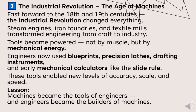Next is the industrial revolution — the age of machines. Fast forward to the 18th and 19th centuries: the industrial revolution changed everything. Steam engines, iron foundries, and textile mills transformed engineering from craft to industry. Tools became powered not by muscle but by mechanical energy. Engineers now used blueprints, precision instruments, drafting tools, and early mechanical calculators like the slide rule. These tools enabled new levels of accuracy, scale, and speed. Lesson: machines became the tools of engineers, and engineers became builders of machines.